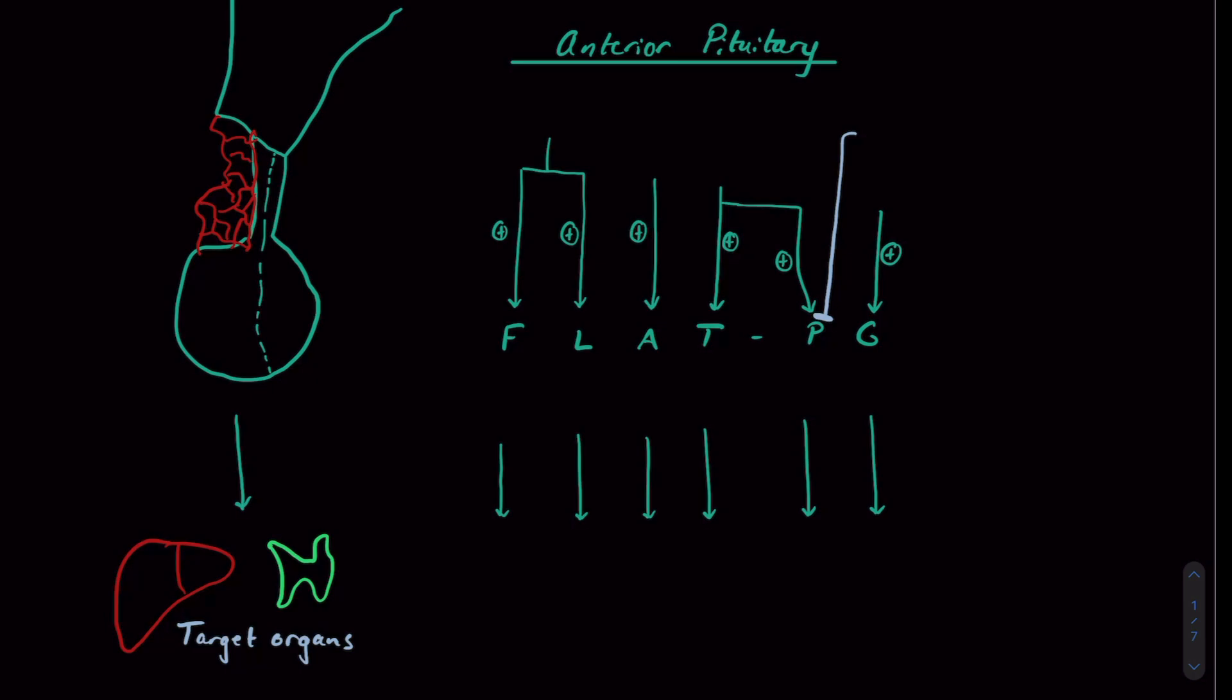So first, what is the anterior pituitary? It's this part of the brain right here that's connected through what we call an infundibulum, or pituitary stalk, to the hypothalamus, which is a more superior part of the brain.